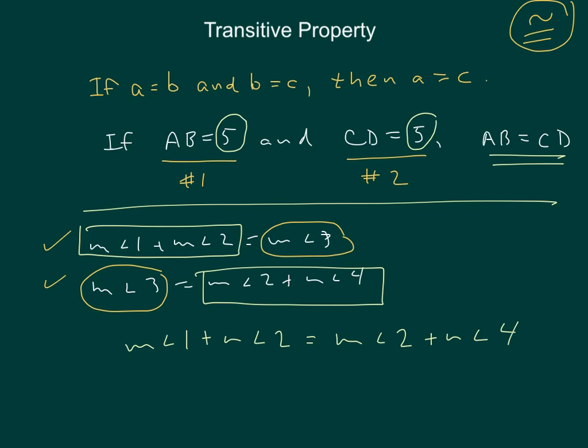That's the transitive property. So to review, you have to have two equations, and in each equation, they have to be equal to the same thing.